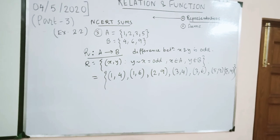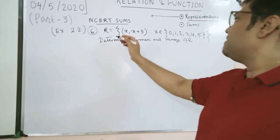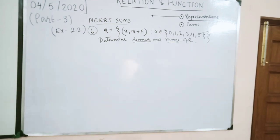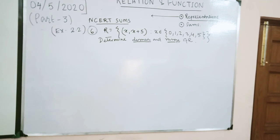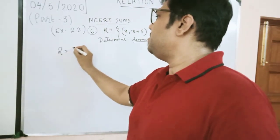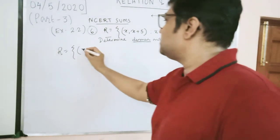Next is sum number 6. A relation is given and we need to find the domain and range of R — concepts already discussed in the previous part. The set is x ∈ {0, 1, 2, 3, 4, 5} and the ordered pair is of the form (x, x+5). Starting from 0: 0 + 5 = 5, so (0, 5) is included.